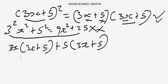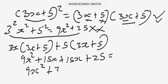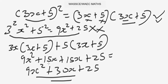When you simplify: 3x times 3x equals 9x squared; 3x times 5 equals 15x; plus 5 times 3x equals 15x; plus 5 times 5 equals 25. So collecting like terms: 9x squared, 15x plus 15x equals 30x, plus 25. That will be the solution to this problem.